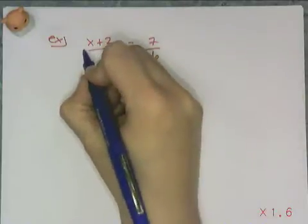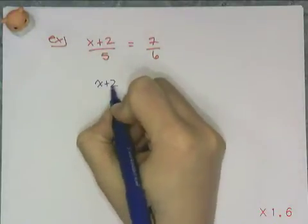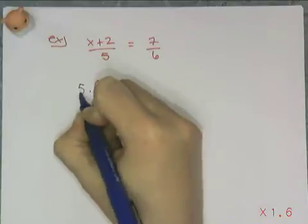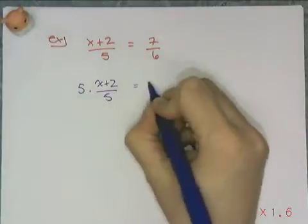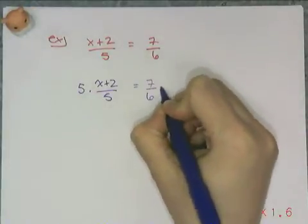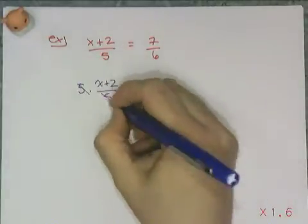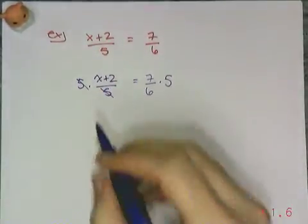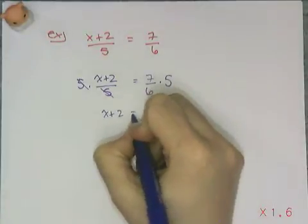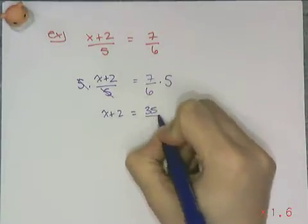So I'm going to take (x+2)/5, and I'm going to multiply it by 5 to get rid of the divide by 5. And I take 7 sixths, and I multiply it by 5 as well. So those 5s are gone. And I'm left with x+2 equals 35/6.